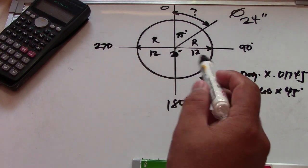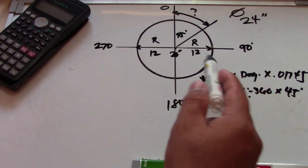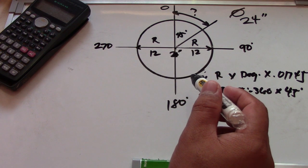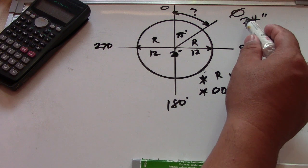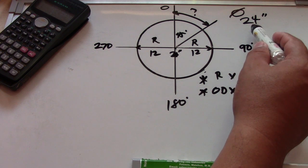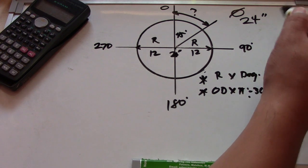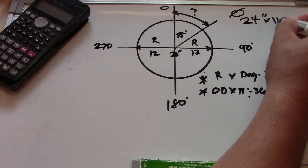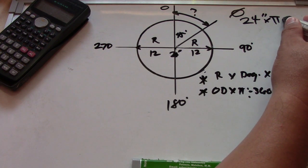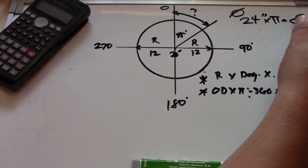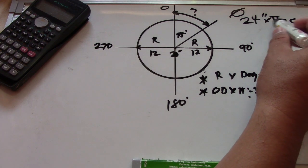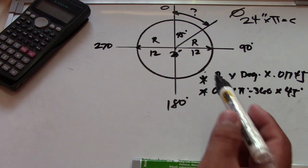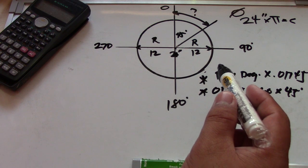First we will find the circumference of this pipe. We have 24 inches, so just multiply it by pi. The circumference equals 24 times pi, where pi is 3.1416.